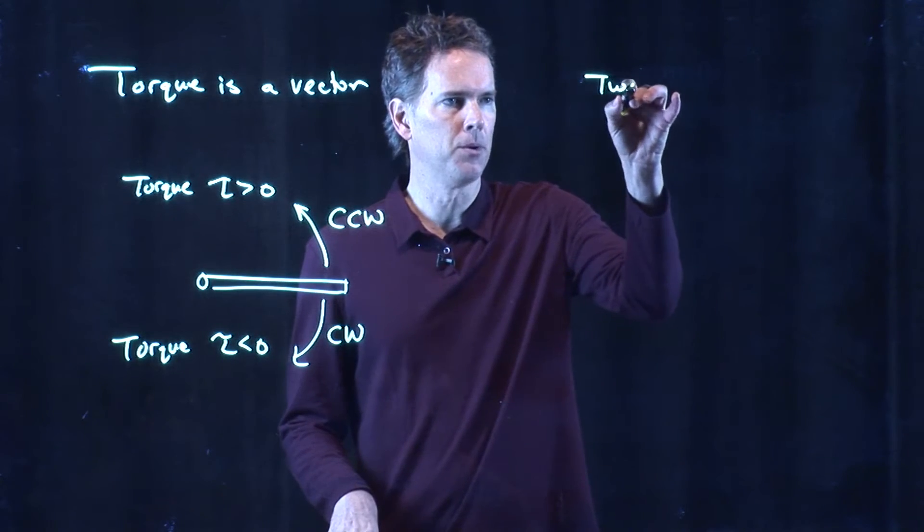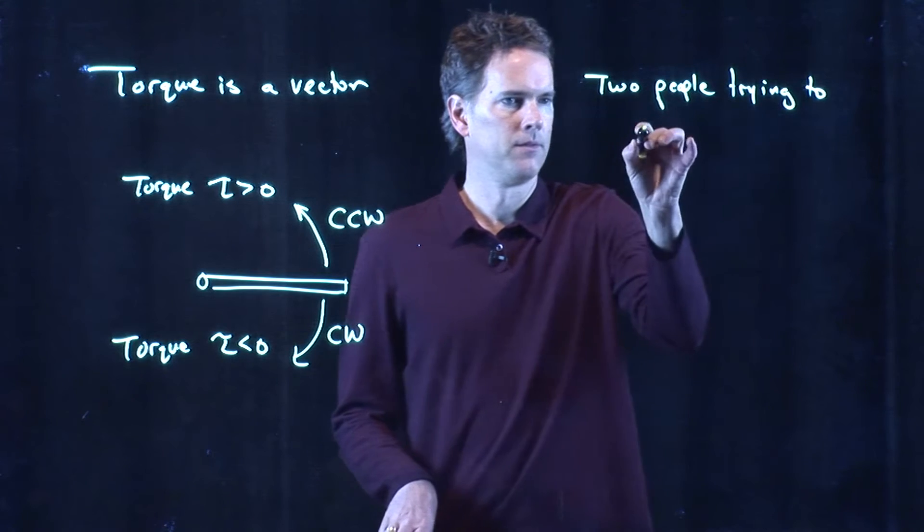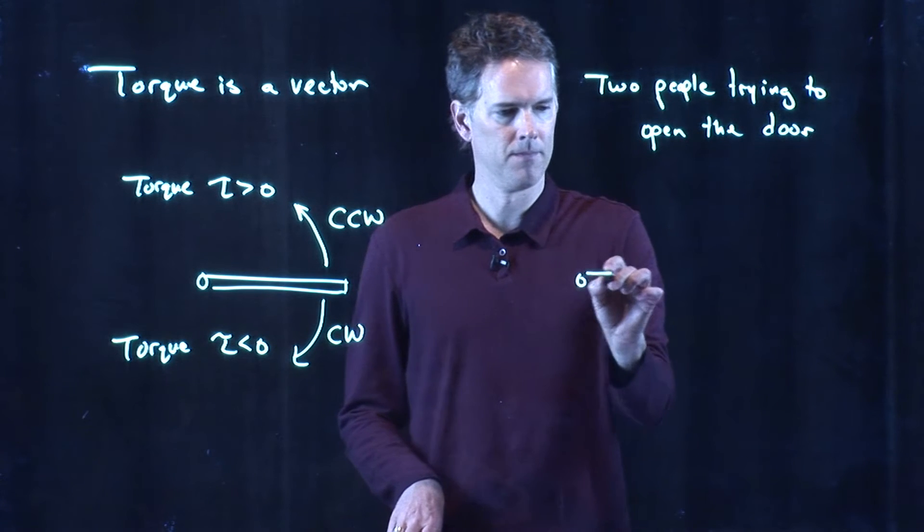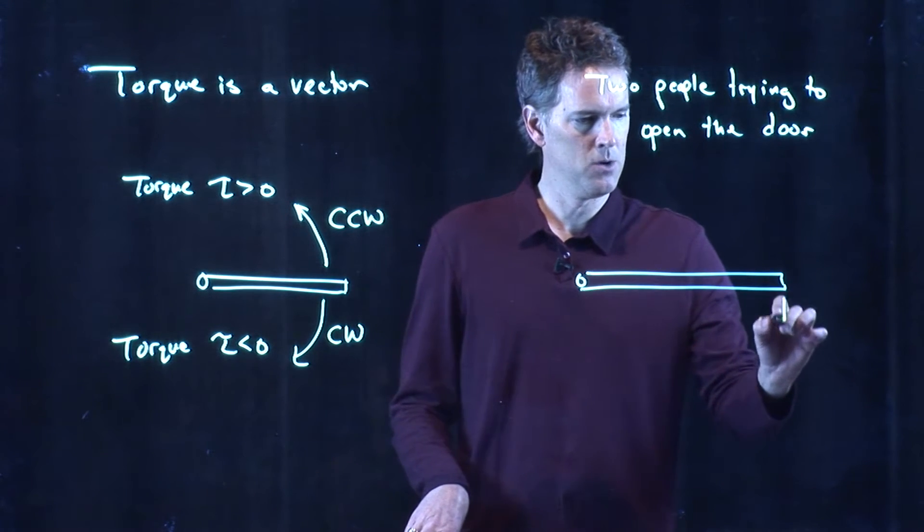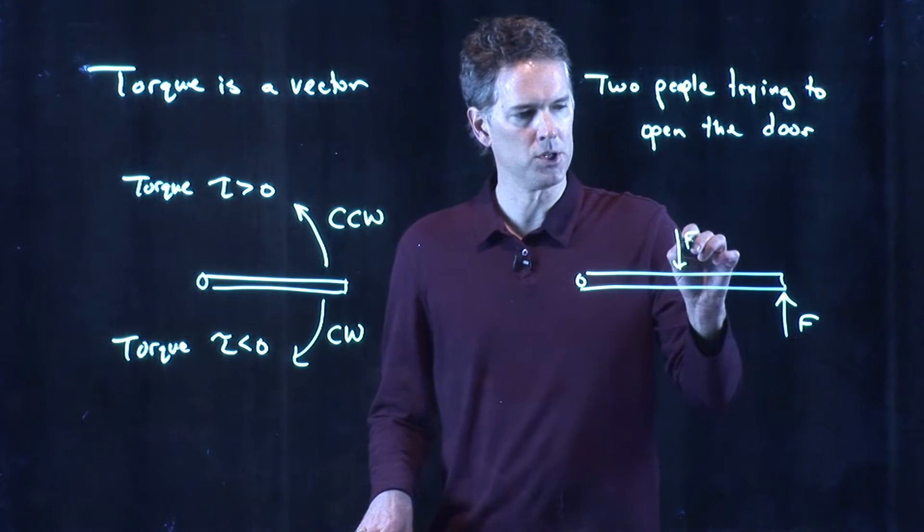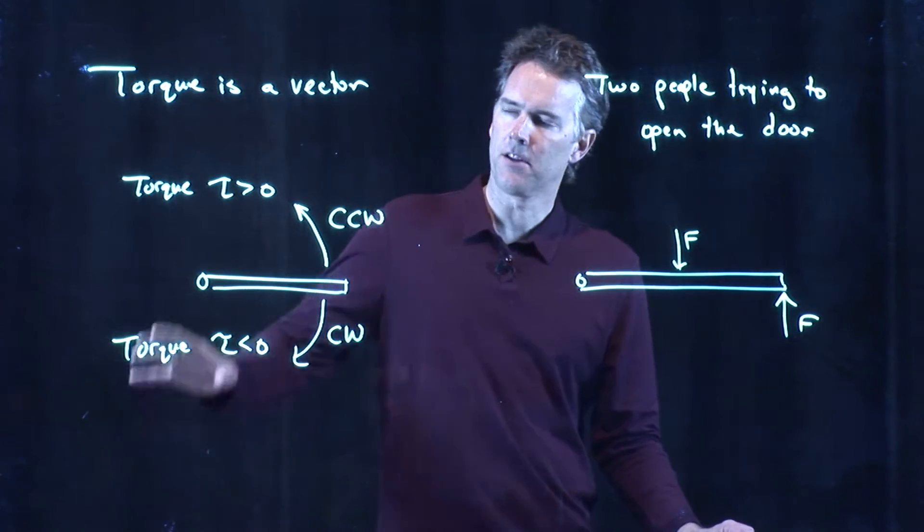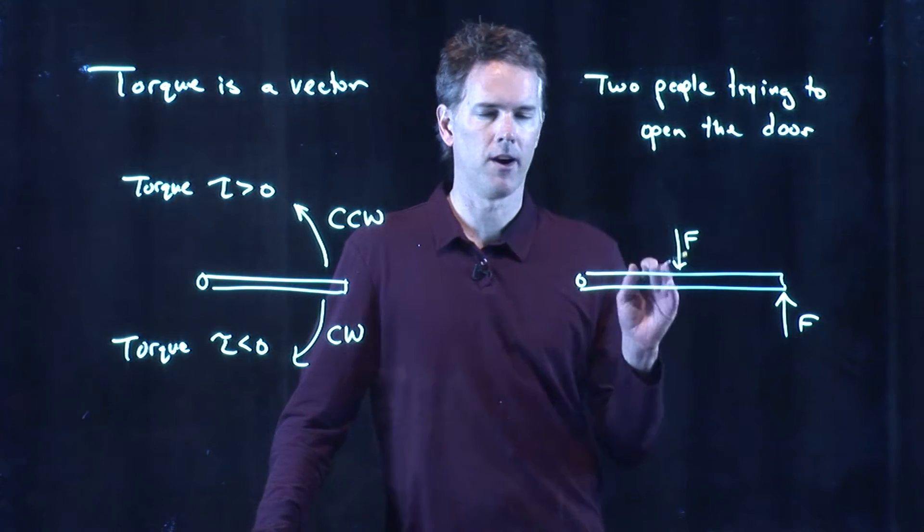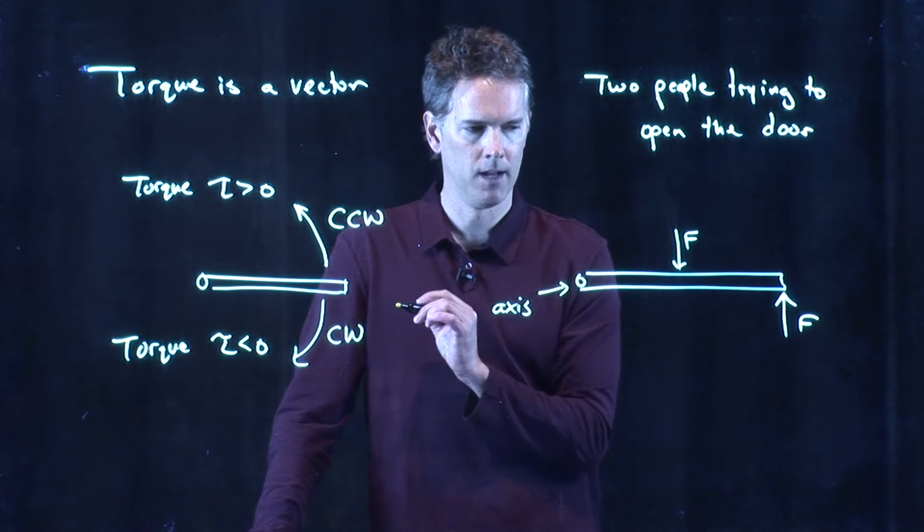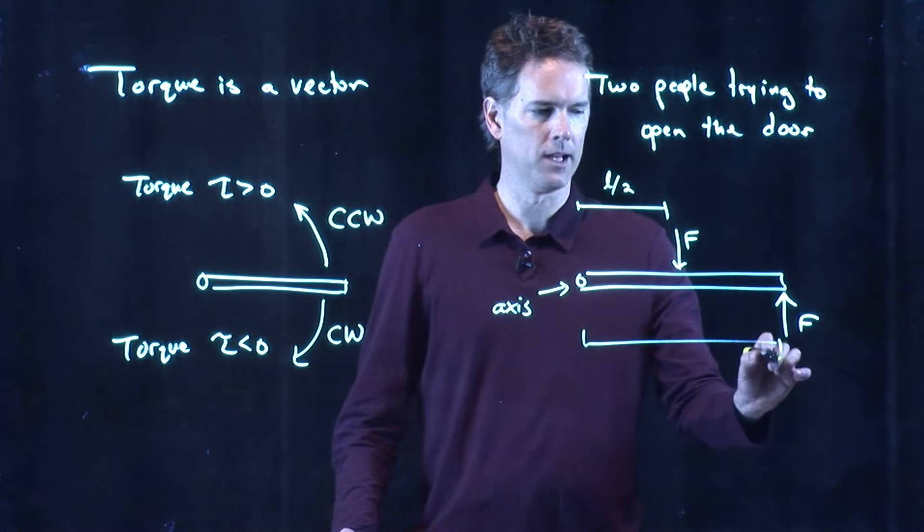So let's say we have two people trying to open the door. So here's our door. And you push on the end of the door with a force F. But somebody else is trying to come in, and they are pushing on the middle of the door with the same force F. Let's see if based on this sign convention, we can figure out who's going to win. This is our axis of rotation, where the hinge is. And let's say that this length here is L over two, and the whole length of the door is L.